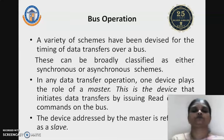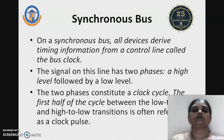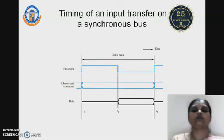A variety of schemes have been devised for timing data transfer over a bus, classified as synchronous and asynchronous schemes. In any data transfer operation, one device plays the role of a master — the device that initiates the data transfer by issuing read and write commands. On a synchronous bus, all devices derive timing information from a control line called the bus clock. The signal on this line has two phases: a high level followed by a low level, constituting a clock cycle. Data from the source is made available to the destination at the successive clock.